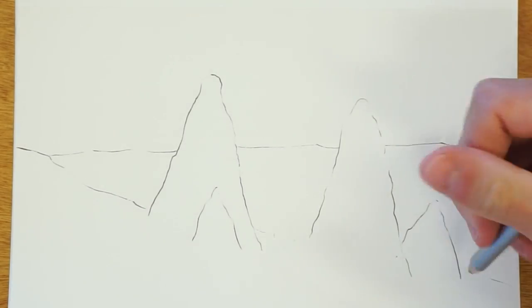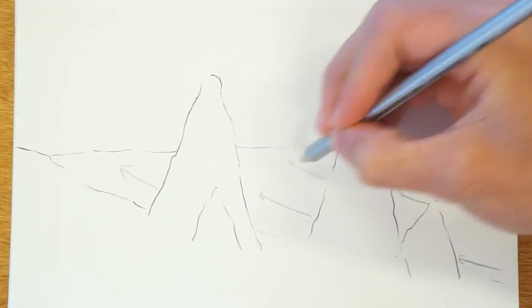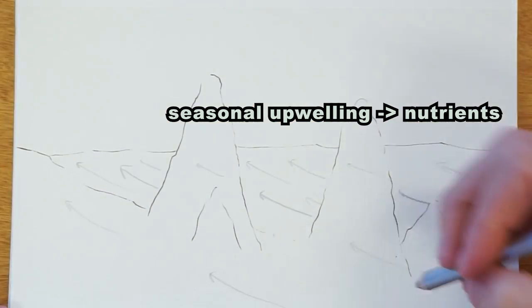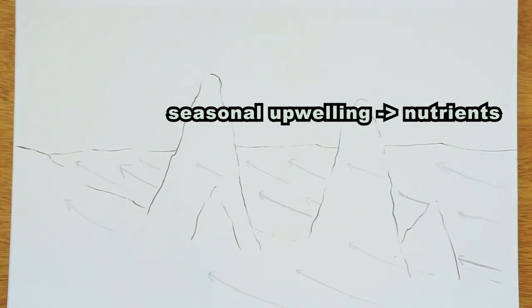In the spring, strong winds cause nutrients from the bottom of the ocean to be driven up towards the surface in a process called seasonal upwelling. These nutrients act like a fertilizer in the shallow water.